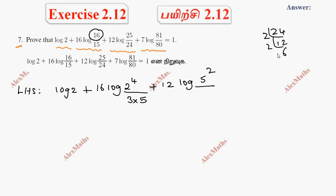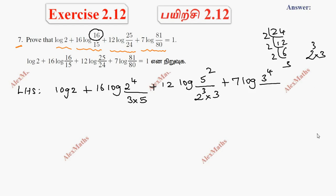Continuing the factorization of 24: 2 times 6, then 2 times 3, giving us 2 cubed times 3. For the last term, 7 log(81/80): 81 equals 3 to the power 4, and 80 equals 5 times 2 to the power 4.